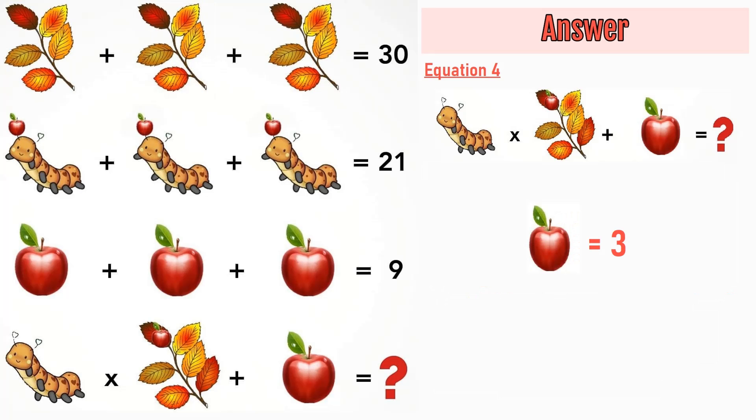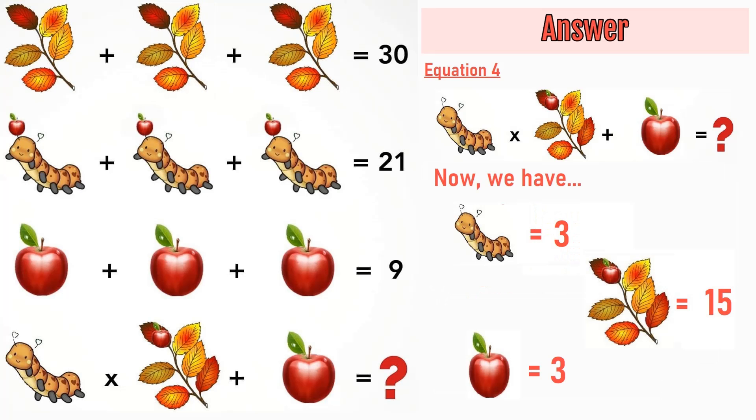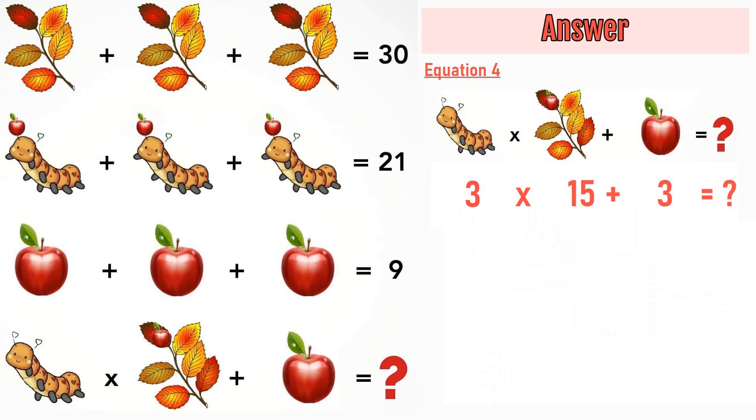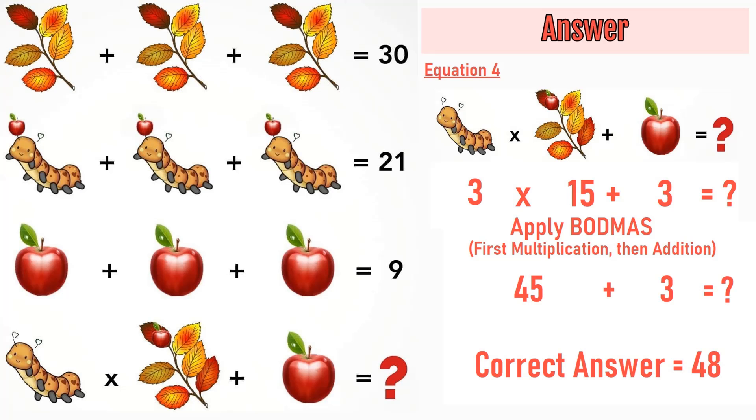An apple is equal to 3. Putting all these values of caterpillar, apple and leaves in equation number 4, we have 3 into 15 plus 3 is equal to question mark. Apply BODMAS. First, we will do the multiplication and then we will do the addition. So 3 into 15 is equal to 45 plus 3 is equal to 48. Correct answer of this puzzle is 48.